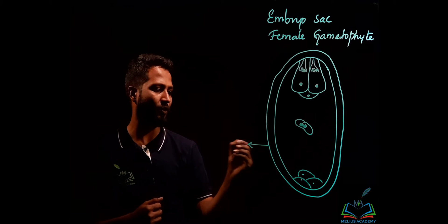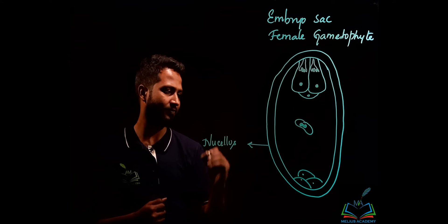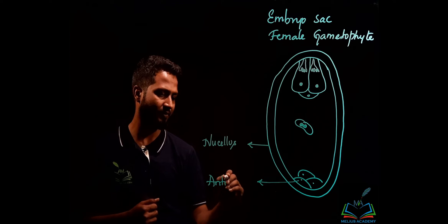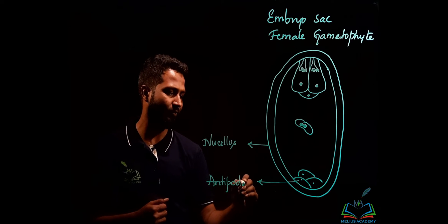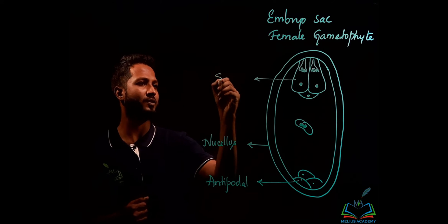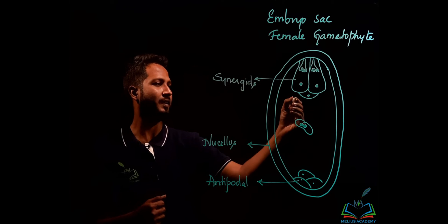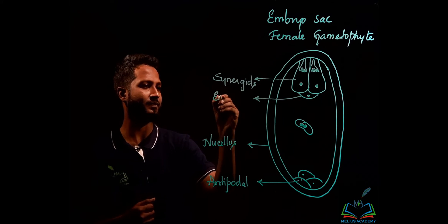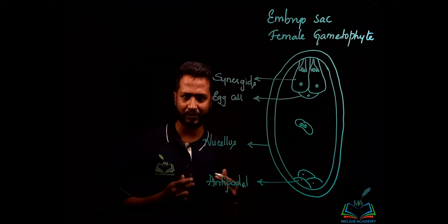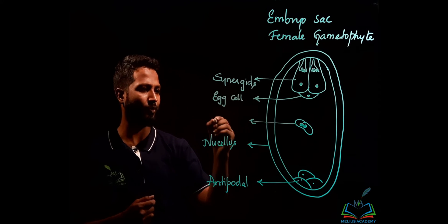The outermost wall layer over here is known as nucellus. Then we have antipodal cells. After antipodal cells we have synergids — there are two synergids. Then we have an egg cell. The central cell placed here is known as the polar nuclei. This is how the structure looks.